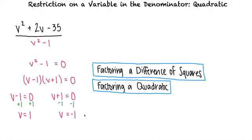Since these two values of v would make the denominator 0, the expression is undefined when v = 1 and v = −1. That's right, and we can write our answer as v = 1, −1.